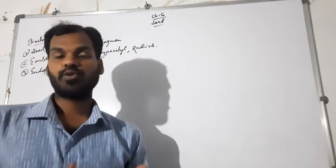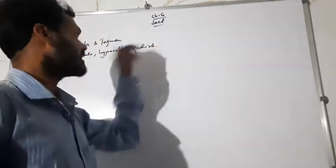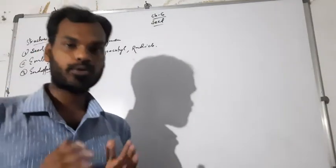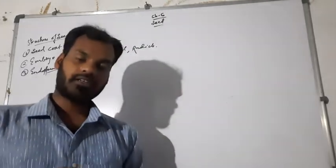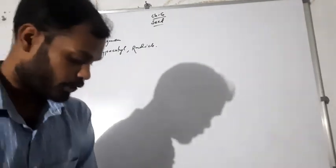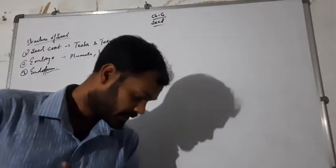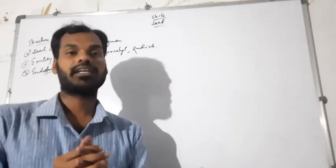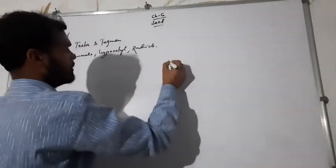The plumule is the part from which the future shoot will develop, and the radicle is the part from which the future root will develop. The hypocotyl is the part of the axis of the embryo lying between the point where the radicle and cotyledons are attached — that is called the hypocotyl — and it lies on the middle line of the axis.